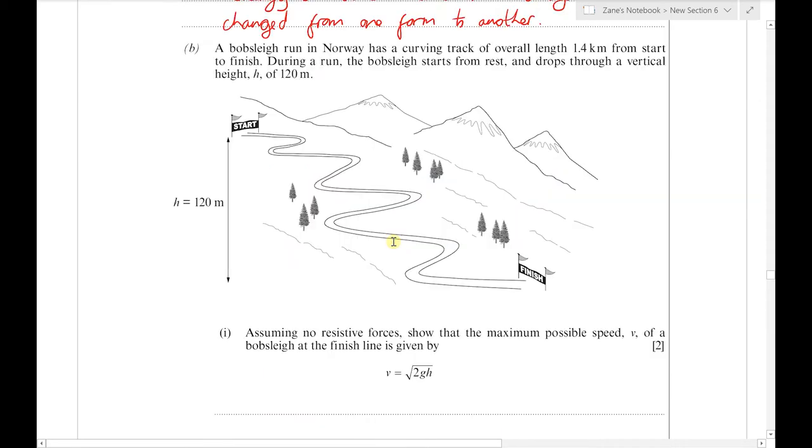Next, the question refers to a bobsleigh run in Norway which has a curving track of overall length 1.4 km from start to finish. During a run the bobsleigh starts from rest and drops through a vertical height h of 120 m.